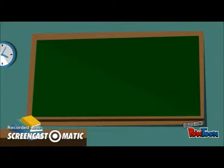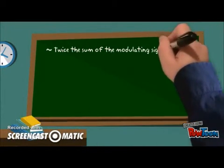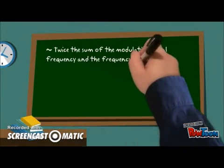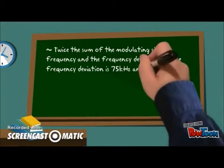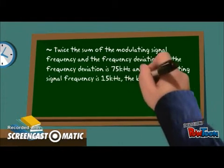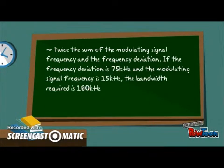For frequency modulation, the bandwidth is twice the sum of the modulating signal frequency and the frequency deviation. If the frequency deviation is 75 kHz and the modulating signal frequency is 15 kHz, the bandwidth required is 180 kHz.